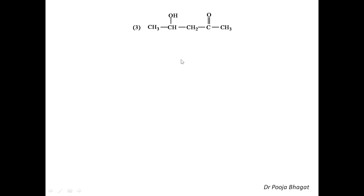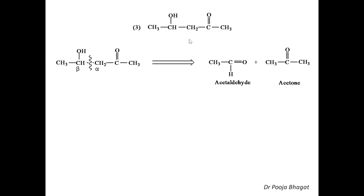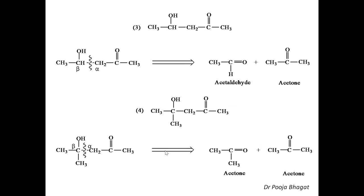For the third example, select alpha carbon and beta carbon, then do the fission. The cleavage gives the carbonyl part and hydrogen comes here — this will be acetaldehyde and this will be acetone. One more example: if this is the aldol, the cleavage gives the carbonyl part — that is acetone — and hydrogen comes here — again acetone. So both parts are acetone, meaning it is the self-condensation product of acetone.